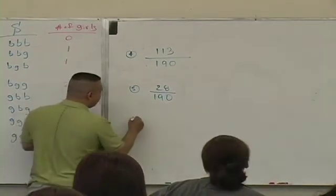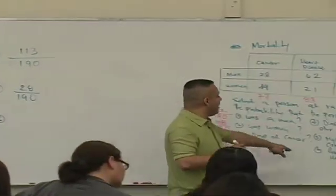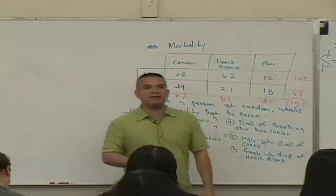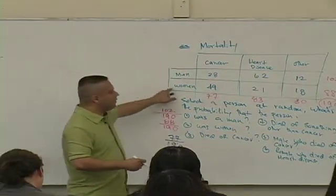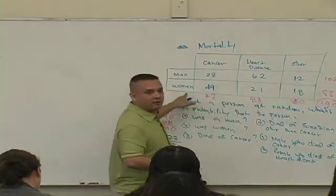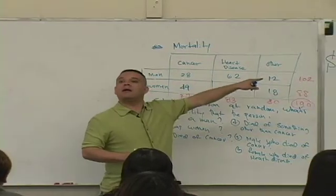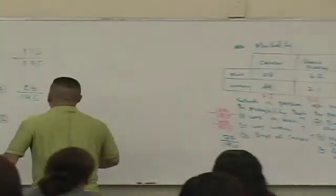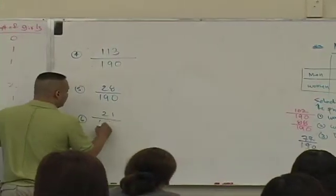Number six. A female who died of what? Heart disease. So there's reference to sex. You have to be a what? A woman, I guess. Female. And what? You die of heart disease. How many? 21. 21 over? 90.